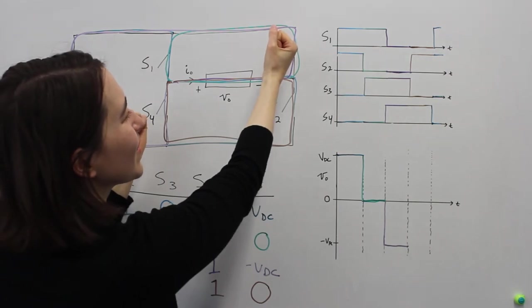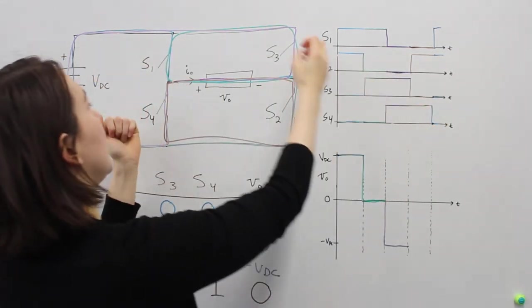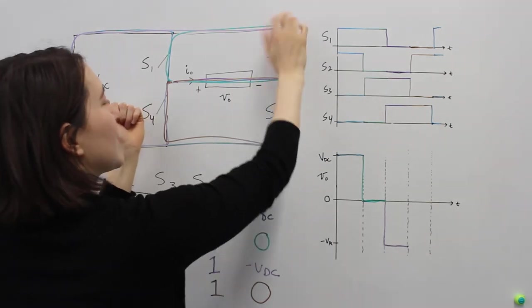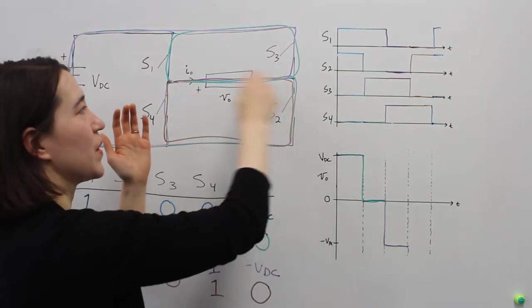And now we are going to do one more switch. We want S2 and S4 to be on. S2 and S4. So this turns off and this turns on, these two. And we are also going to get that 0 through here.